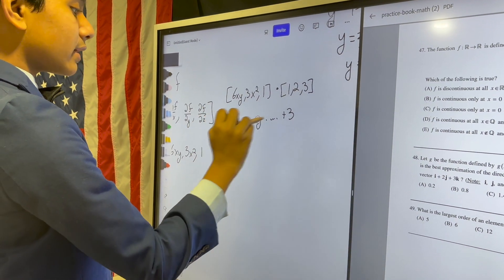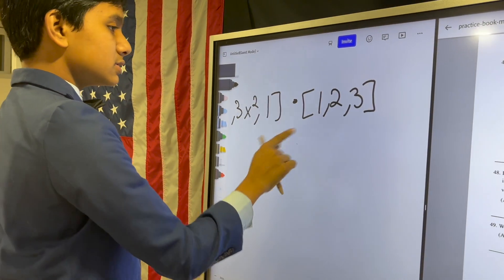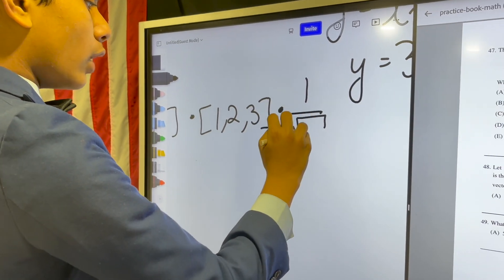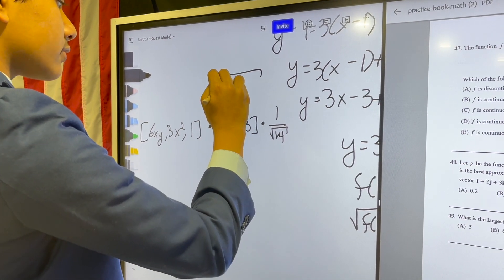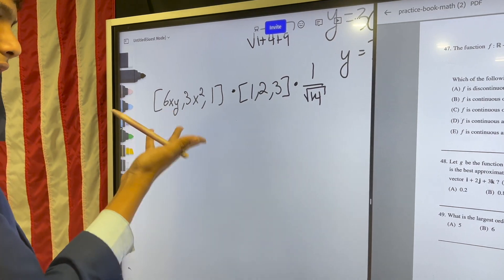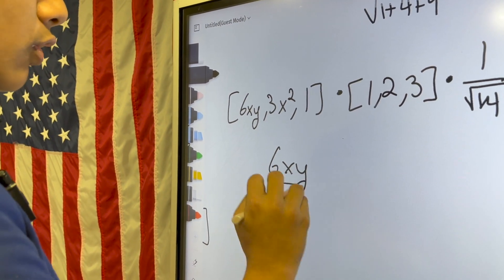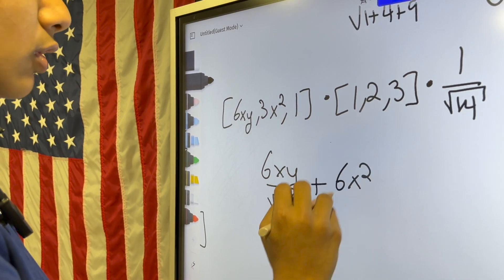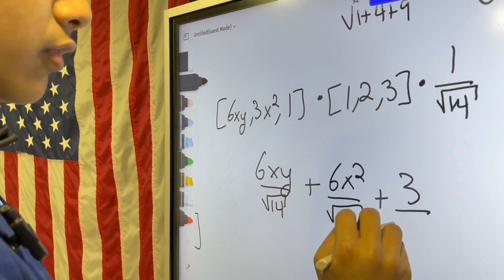But one extra thing we have to do first is to normalize this vector, which means we have to multiply it by 1 over its magnitude, which in this case is the square root of 1 plus 4 plus 9, which is the square root of 14. So then, what do we get? We get 6xy over √14 plus 6x² over √14 plus 3 over √14.